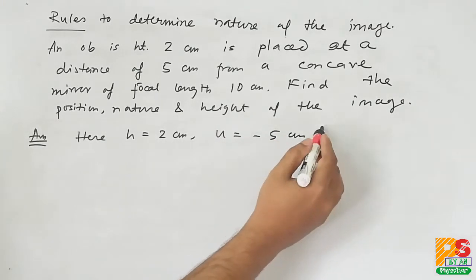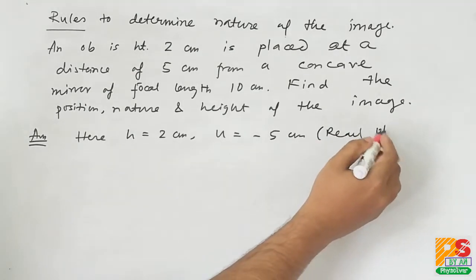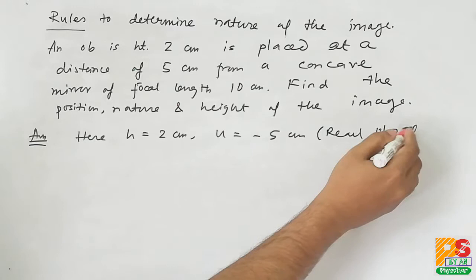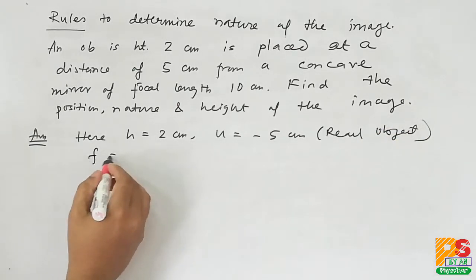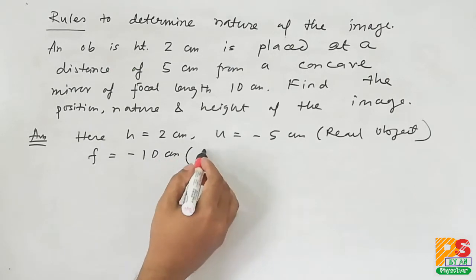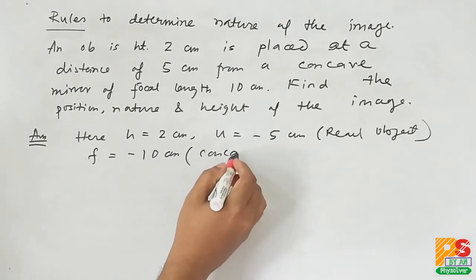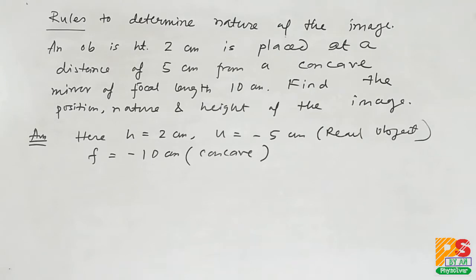U equals to minus 5 cm because it is a real object. For real object U is always negative and for virtual object U is positive. F is also negative because it is a concave mirror. If you have any doubt, you can see my last video to find the rules.